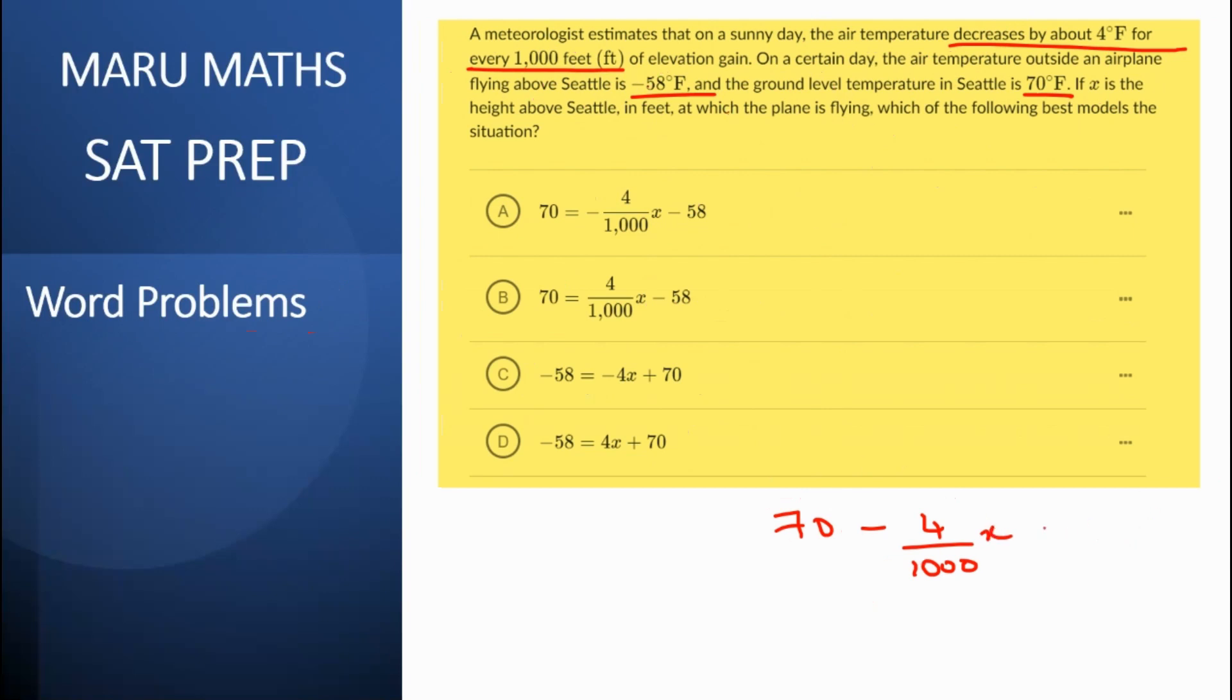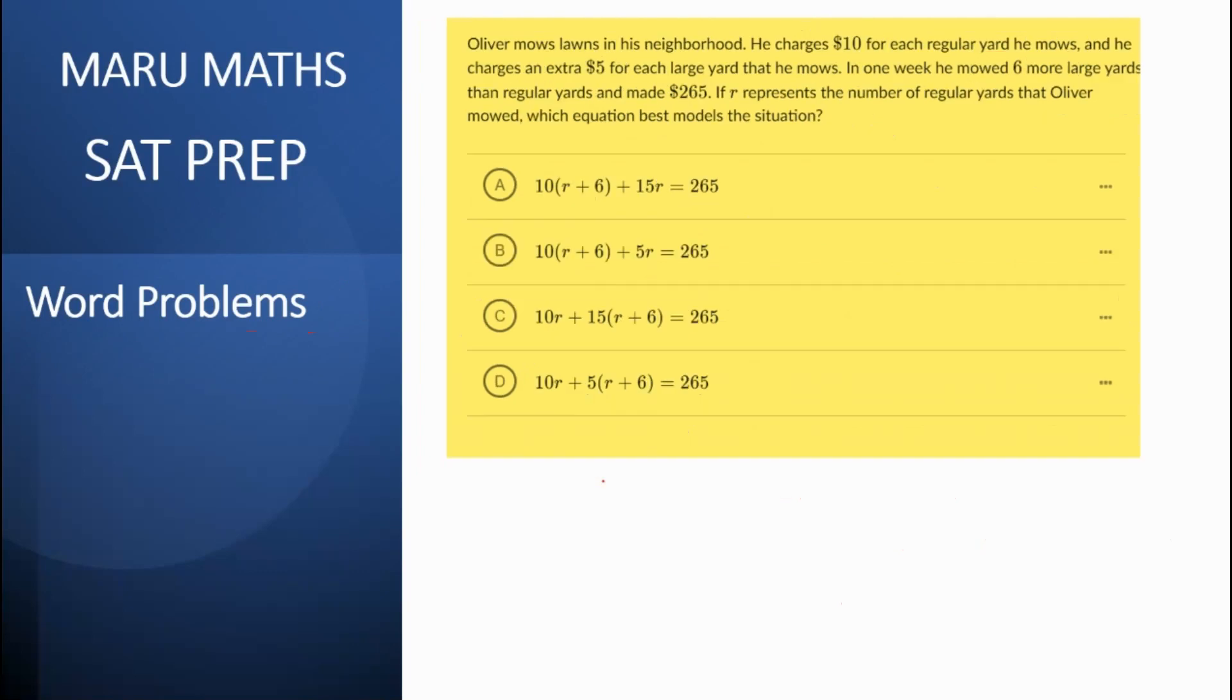So in this case, the temperature of the plane is given as minus 58. So in these options, we just see 70 is equal to minus 4 by 1000. But however, in this case, we can write this as 70 is equal to 4 by 1000 x minus 58. So I think the right answer should be B. This is the way we would interpret this question.